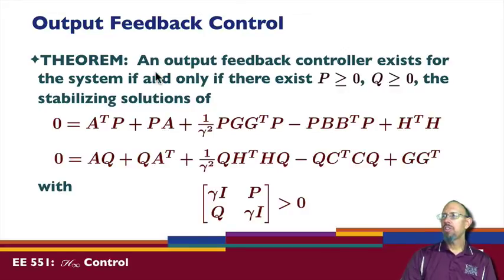And we have now this theorem. An output feedback controller exists for the system if and only if there exists positive semi-definite. Notice that p and q don't have to be positive definite in these equations. They can be semi-definite.